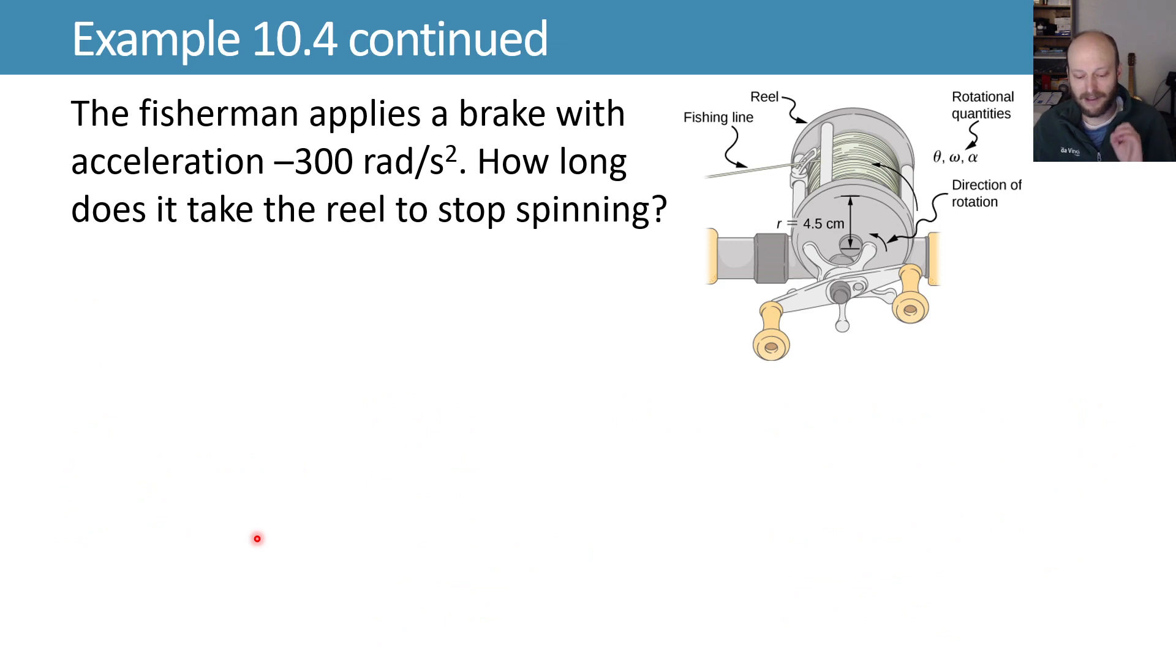One more thing, at this point we apply a brake with an acceleration of negative 300 radians per second squared. How long does it take the reel to stop spinning? Now we'll have a new initial angular velocity, which is whatever it was spinning with at the end of this, that 220 radians per second. And we want to know how long it takes to stop spinning, so our final velocity will be zero. We have from the problem statement alpha of negative 300 radians per second squared, which leaves us wondering what do we use to relate these?